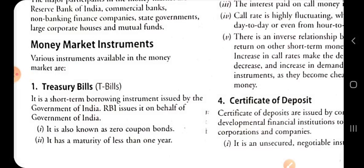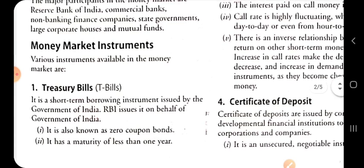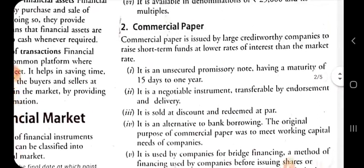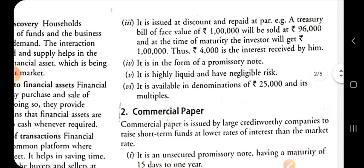Treasury bill is a short term borrowing instrument which is issued by the government of India, and thereafter RBI issues it on behalf of the government of India. The main feature of the Treasury bill is that it is a zero coupon bond with a maturity period of less than one year. It is called a zero coupon bond because it is issued at discount and repaid at par.